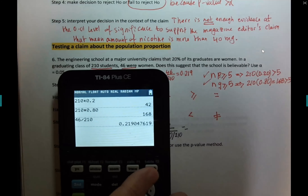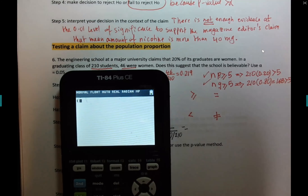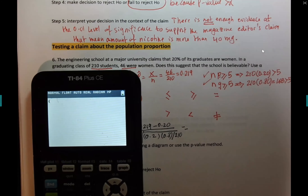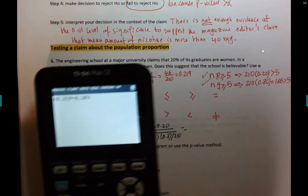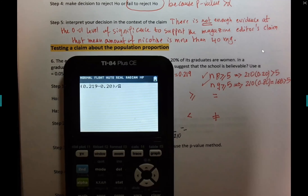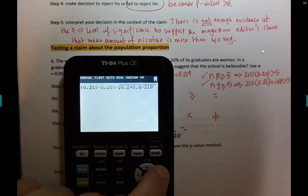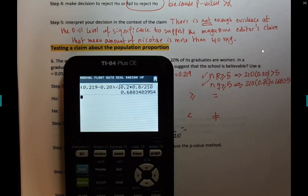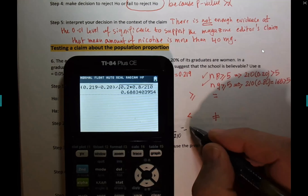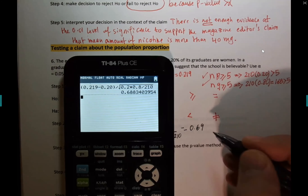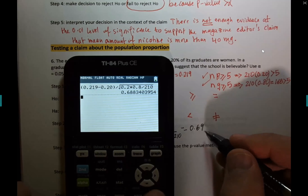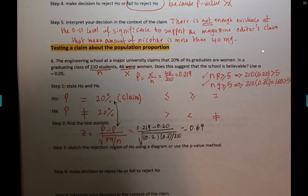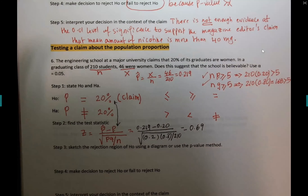Here's how to enter it if you're using the formula on the calculator: 0.219 minus 0.20 in parentheses, divided by sqrt(0.2 × 0.8 / 210). That gives you 0.688, or 0.69 to two decimal places. However, you don't need to do this by hand — that was just showing you the calculation.